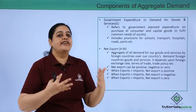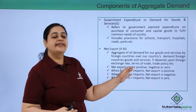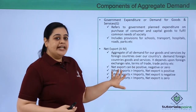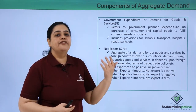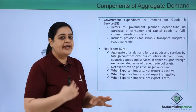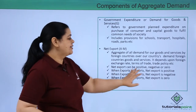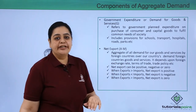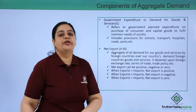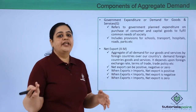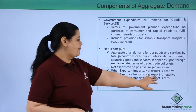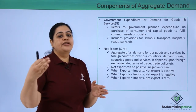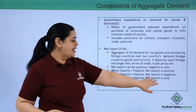Trade policy also affects net exports — if the government imposes certain duties or quotas, goods and services become more expensive and demand shifts accordingly. Net exports can be positive, negative, or zero. For example, if India's total exports are 100 million dollars and imports are 80 million dollars, net exports are positive at 20 million dollars. If exports are 50 million dollars and imports are 100 million dollars, net exports are negative. When exports equal imports — say both are 50 million dollars each — net exports are zero.